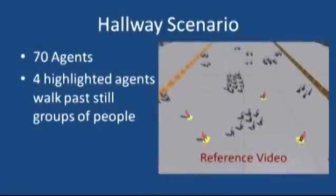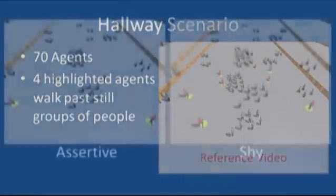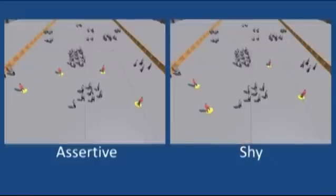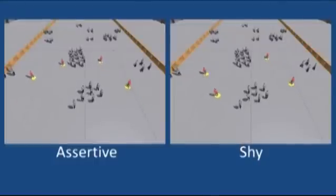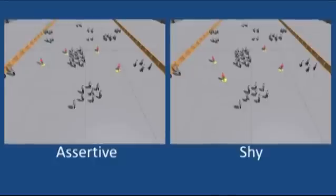In the next scenario, four highlighted agents move past several groups of still people. Here we compare assertive agents to shy ones. Assertive agents move more quickly through the crowd and come much closer to other people.